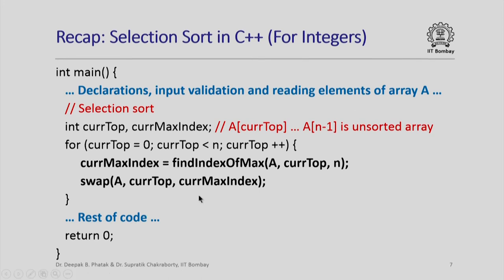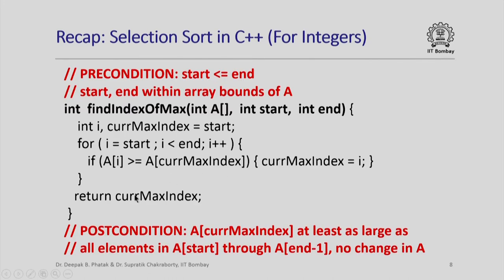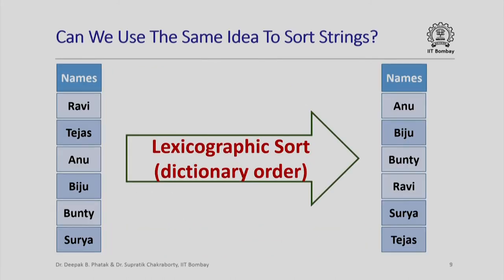How did the function find_index_of_max look like? It has a simple loop that iterates from the start to the end of the subarray of interest. In each iteration, it checks whether the current array element is greater than or equal to the currently maximum array element seen so far — using greater-than-or-equal because we want decreasing order. If the current element is indeed greater than or equal to the current maximum, we update current_max_index with the current index. Finally, we return current_max_index. The question is: can we use the same ideas to sort strings?